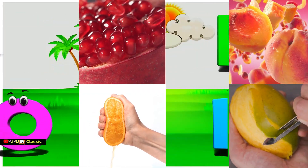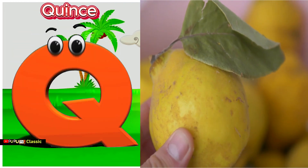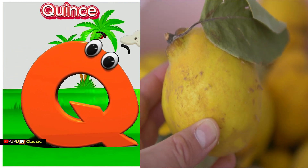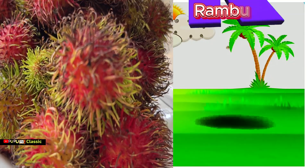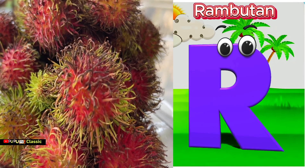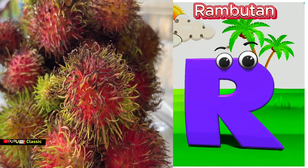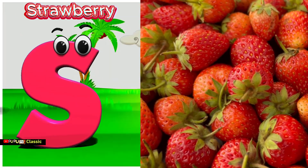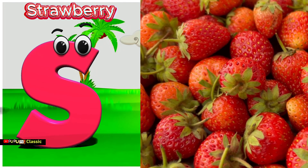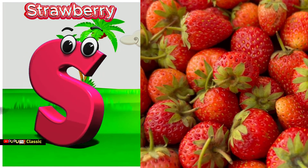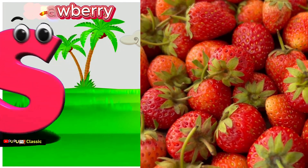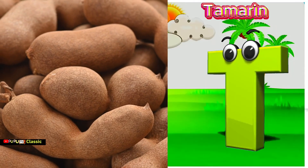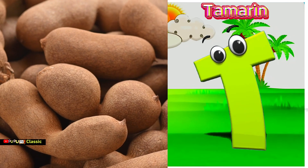Q is for quince, qu-qu-quince. R is for rambutan, r-r-r-rambutan. S is for strawberry, s-s-s-strawberry. T is for tamarind, t-t-t-t-tamarind.